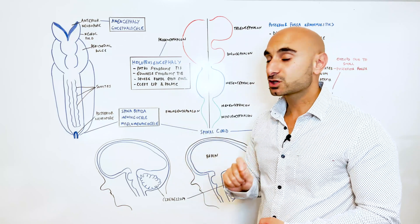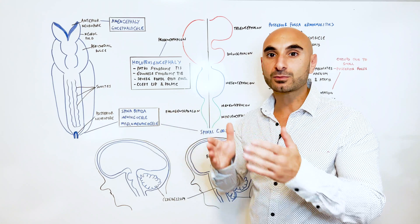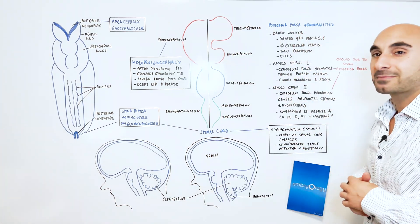And holoprosencephaly is also associated with cleft lip and palate, which is available on my channel. And moving further down the brain now, we have posterior fossa abnormalities.